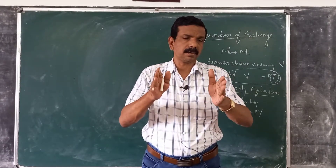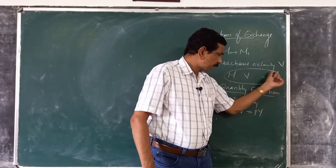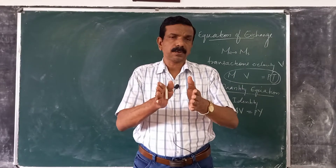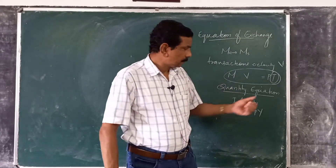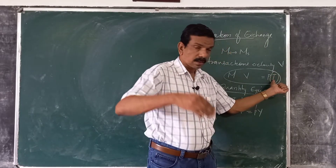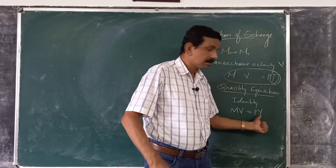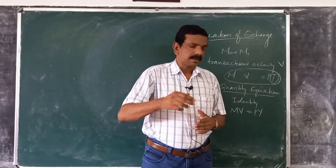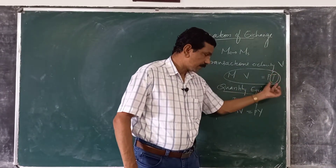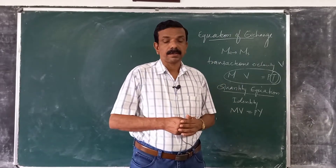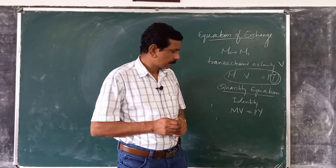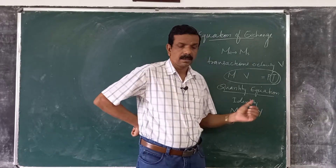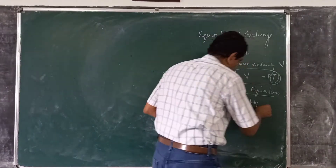However, T and Y are not the same thing, because suppose there is a transaction involving a used car — a car produced in a previous year. Even though this purchase is a transaction included in T, it is not included in Y, because Y covers transactions involving current output only. But we can say that the dollar volume of transactions will be roughly proportional to the value of output. So in this form, Y is output, P is a price index, and M and V are as usual. The quantity equation is MV = PY.